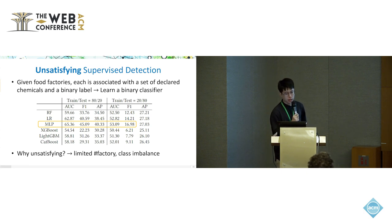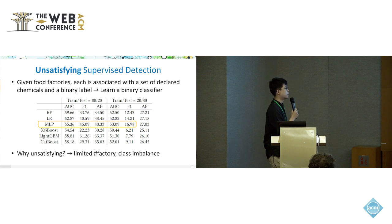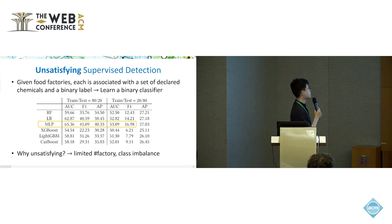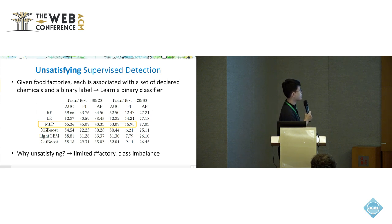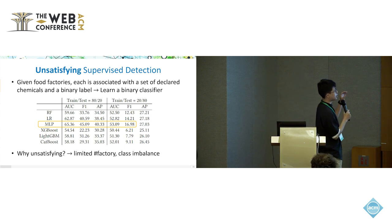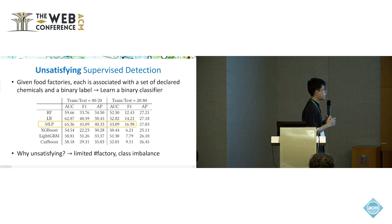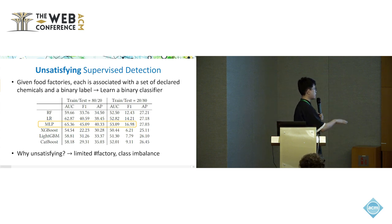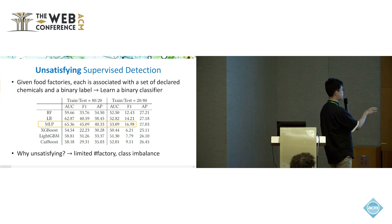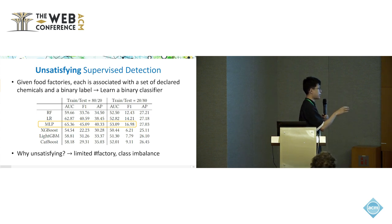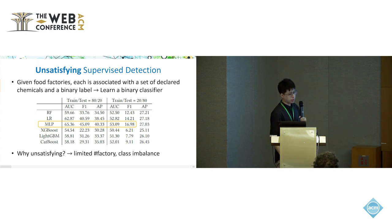Here we present the model for detecting illicit food factories. The method is called the Graph-Aware Self-Supervised Contrastive Anomaly Ranking method. It has three major components: the first is the graph autoencoder module on the top; the second is factory representation learning; and the last is self-supervised contrastive learning.